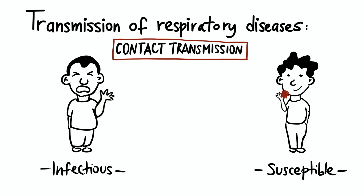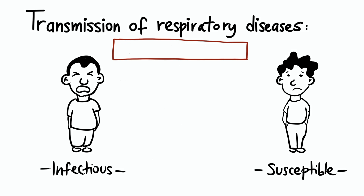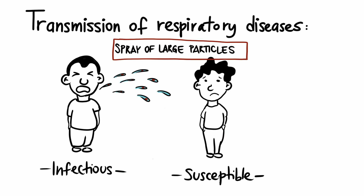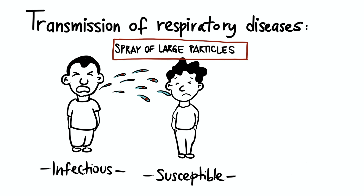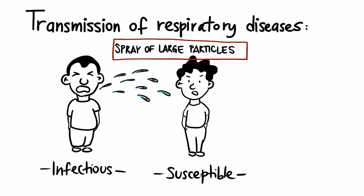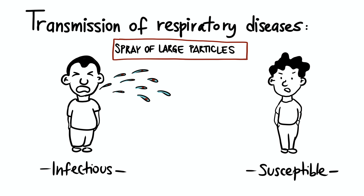There is not much evidence at all that this is the way you can get COVID-19. The second way is when a spray of large particles, like a drop of rain, fly out of the infected person's mouth and land on your eyes, nose, or mouth. To get infected by this route, you must be close up to a person.